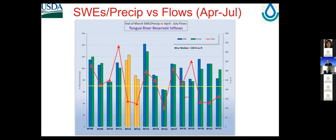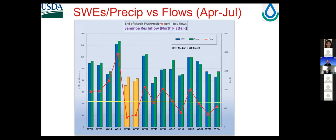Tongue River Reservoir inflows: looking at 2012, we're about the same as in 2021 as the flows we saw in those two drought years. Our forecast is a little bit better than what we've had the last couple of years. For the Upper North Platte, the Seminole Reservoir inflow — in 2021, flows were comparable to 2012 and 2013. With better antecedent conditions we're thinking maybe a little bit better flow, but still below the 30-year median or 660,000 acre feet.